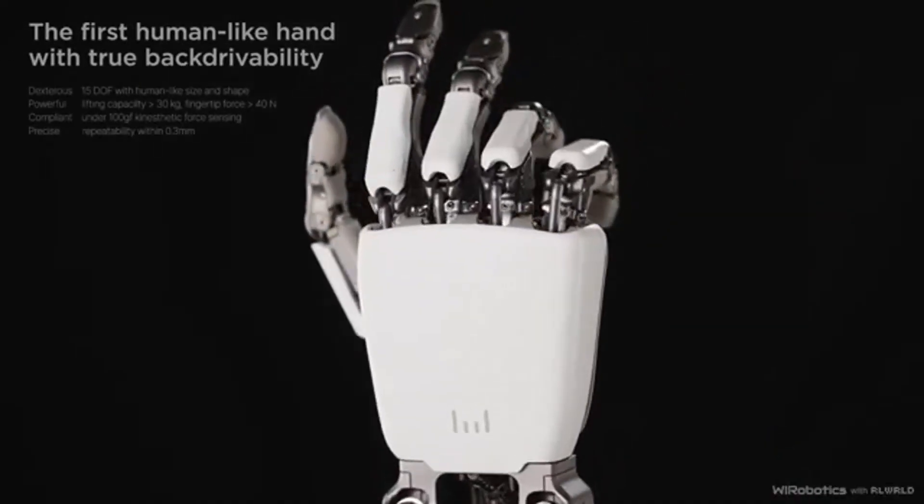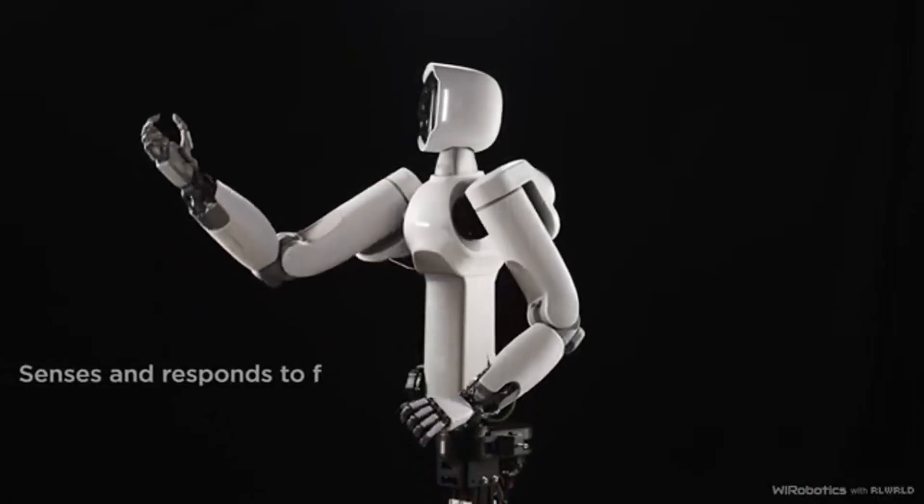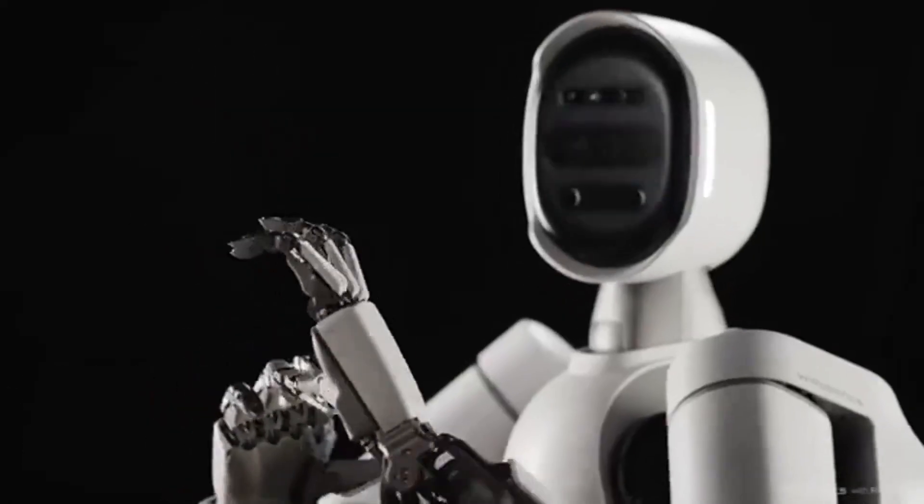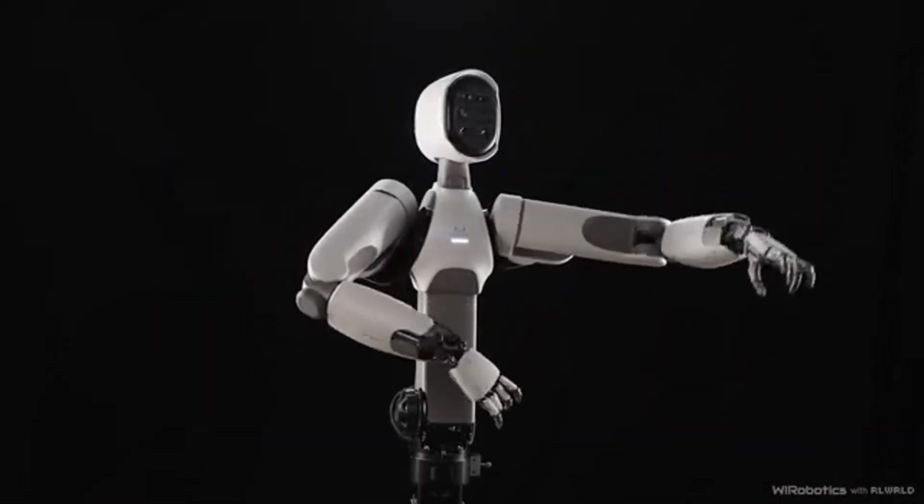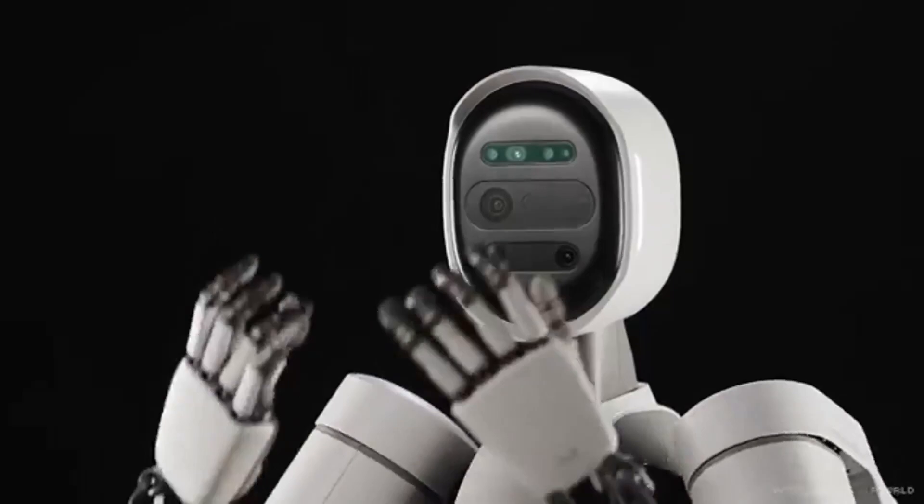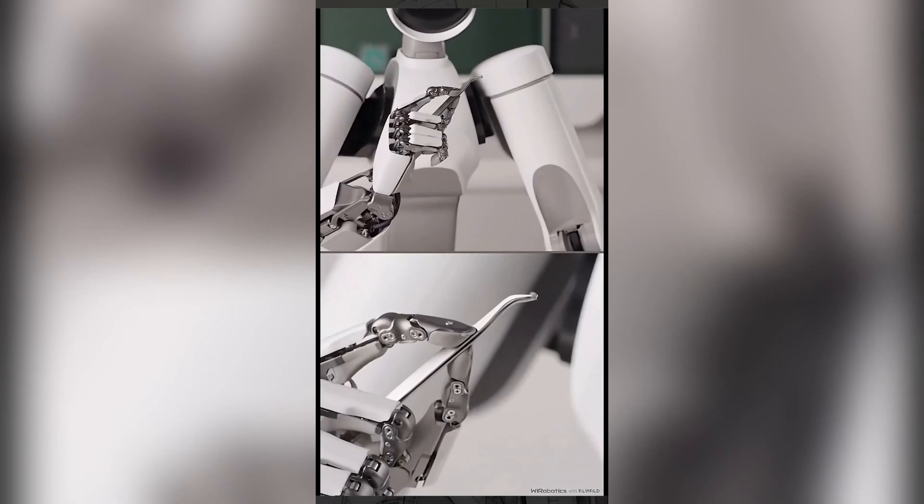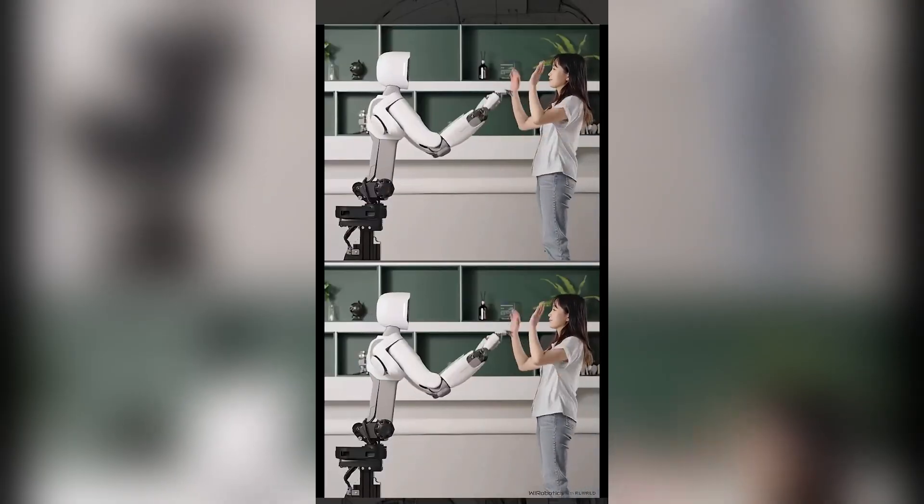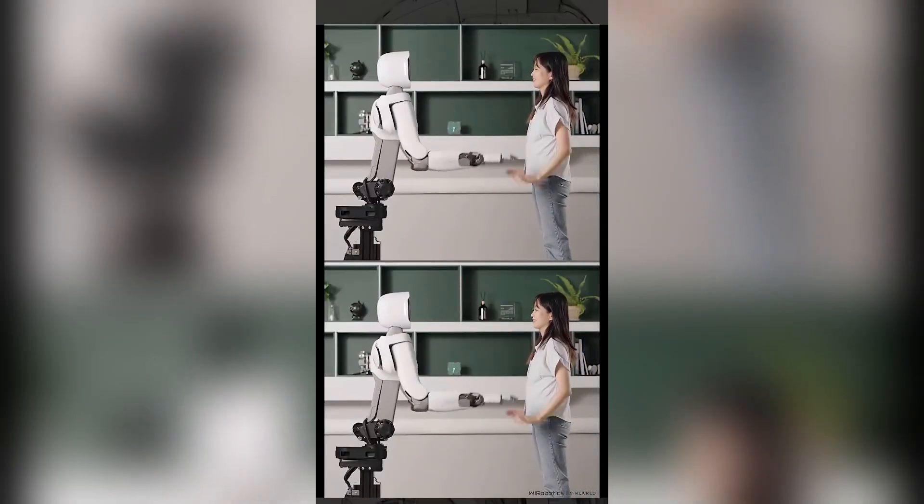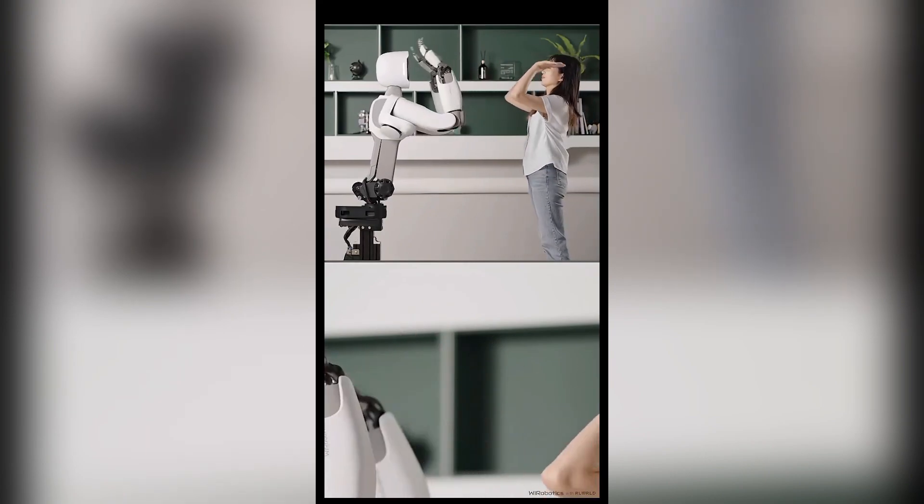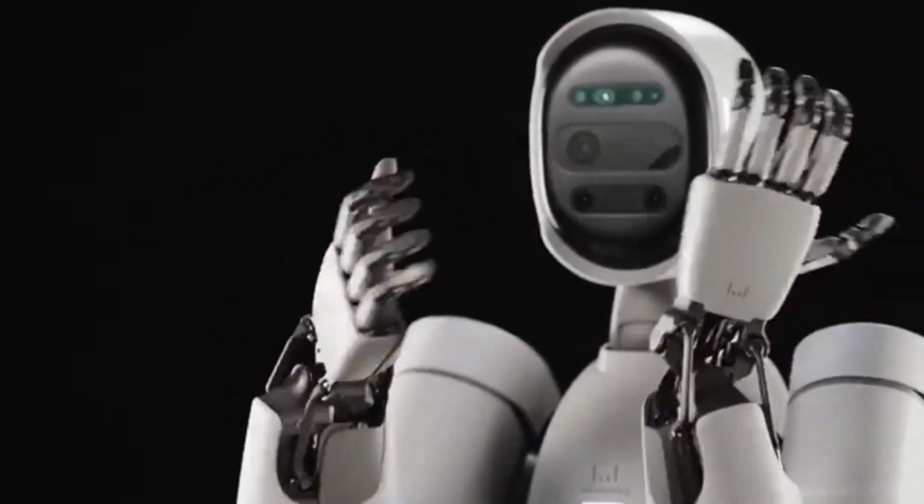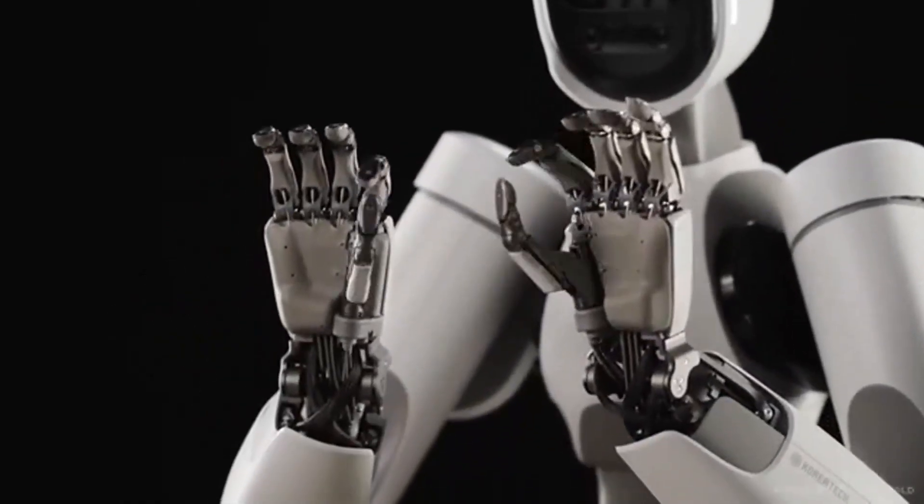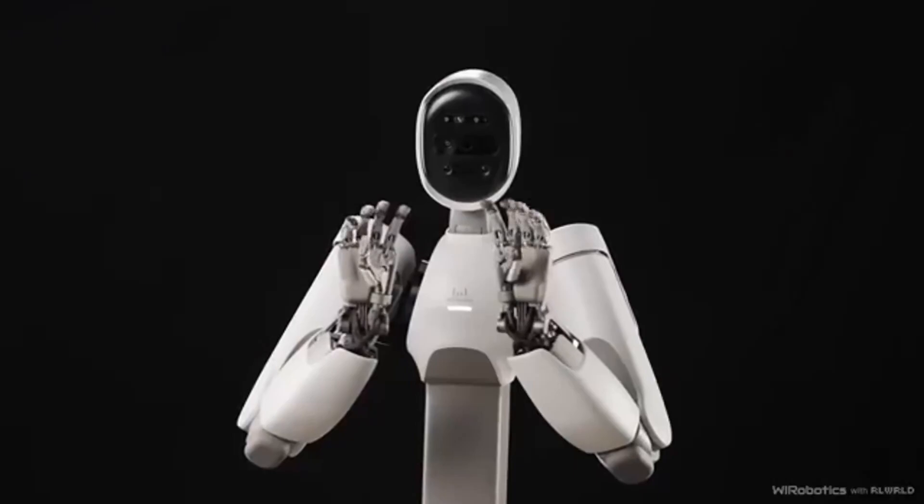Now, think about the implications here. When you have a robot with hands that precise, suddenly tasks that were previously too delicate for machines are on the table. Surgery is an obvious one, but it's not just about operating rooms. Imagine lab technicians who need to handle microscopic tools, or factory workers assembling tiny electronics, or even something as mundane as folding laundry without crushing fabric or losing grip on slippery materials. Alex is being positioned as a multi-purpose humanoid, and its hands are the cornerstone of that versatility.